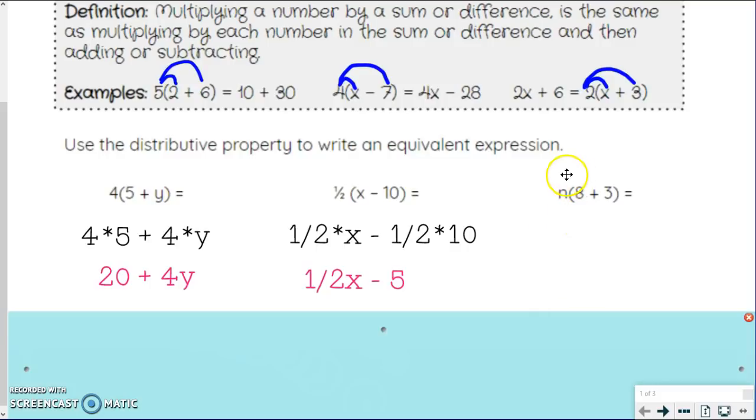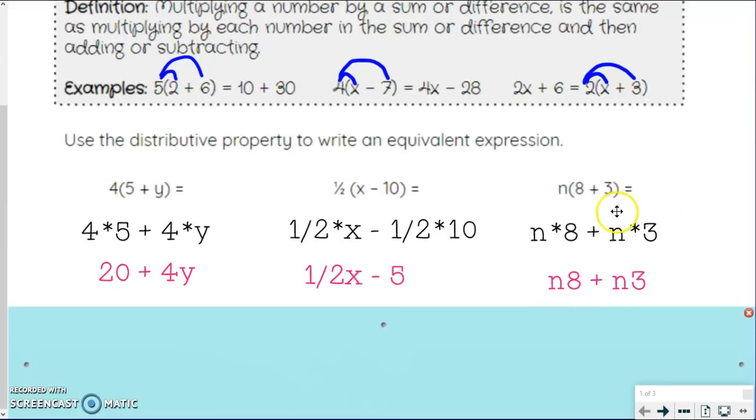And we got one more here. We got the variable on the outside. So we're going to distribute that n to the 8 and the 3. That would look something like n times 8 plus n times 3. You can write this one of two ways. Personally, the way I like to write it is 8n plus 3n, just to show that multiplication. Typically that coefficient goes in front and the variable behind it. Really any of these three would be acceptable.